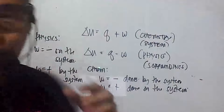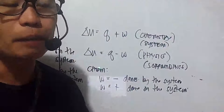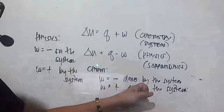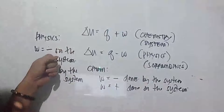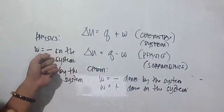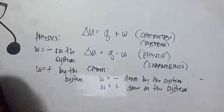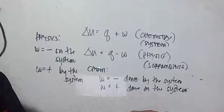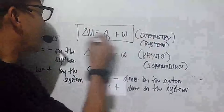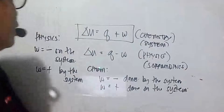The main difference between the two formulas is the point of view: in chemistry we look at the system — when it works, energy is deducted; when work is done on it, energy increases. In physics we look at the surroundings — it's the opposite. In chemistry work done by the system is negative; in physics work done by the system is positive. I'll be discussing the chemistry perspective first in this video and physics in the next.